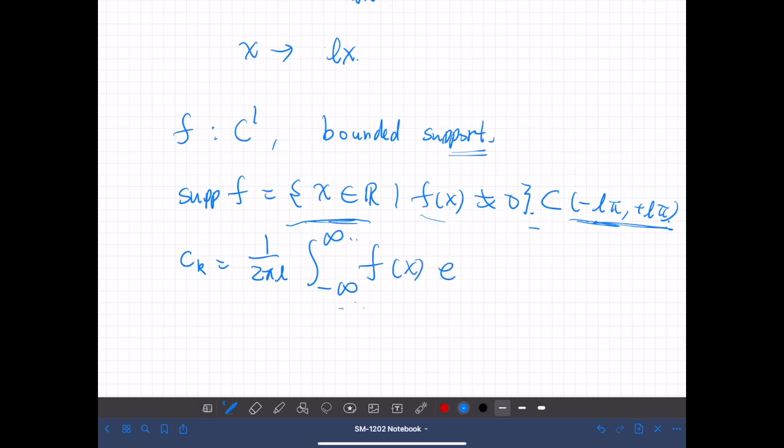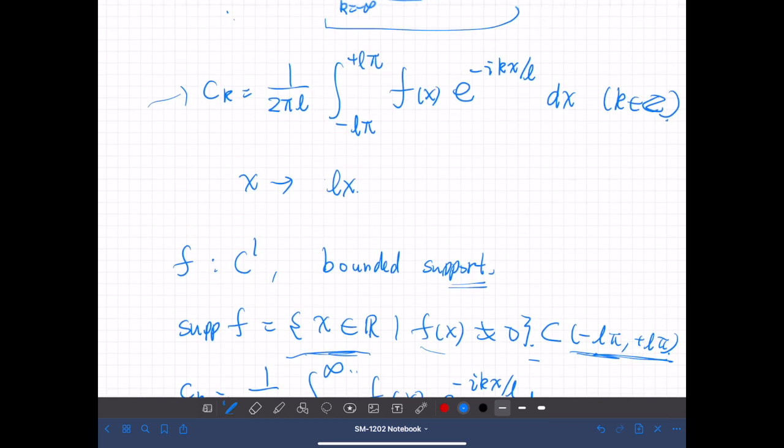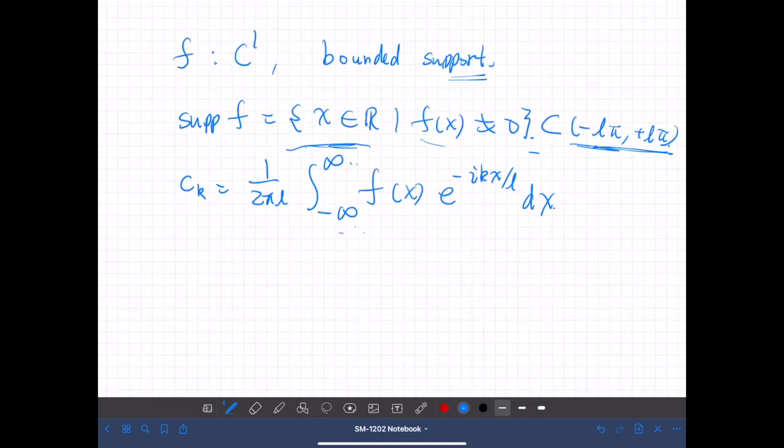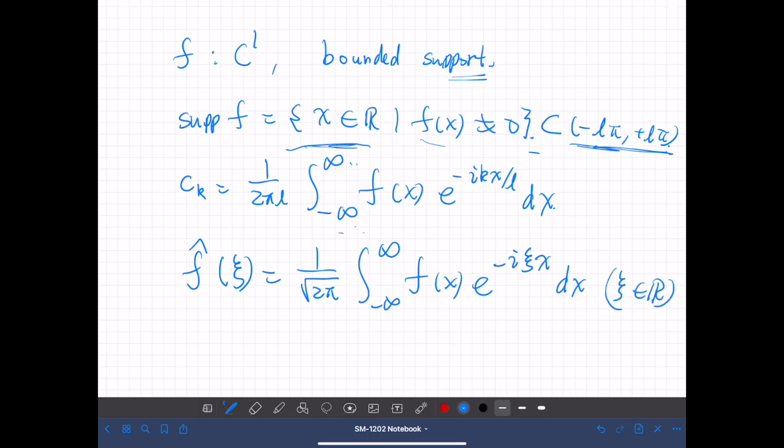So we have f(x) exponential negative ikx over L dx. Now let's define f hat of ξ by 1 over square root of 2π, integral f(x) e to the negative iξx dx, ξ a real variable.